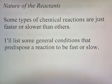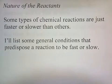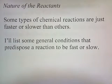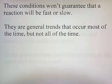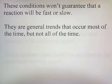Nature of the reactants. Sometimes chemical reactions are just faster or slower than others. I'll list some general conditions that predispose a reaction to be fast or slow. These conditions won't guarantee that a reaction will be fast or slow — they are general trends that occur most of the time, but not all of the time.